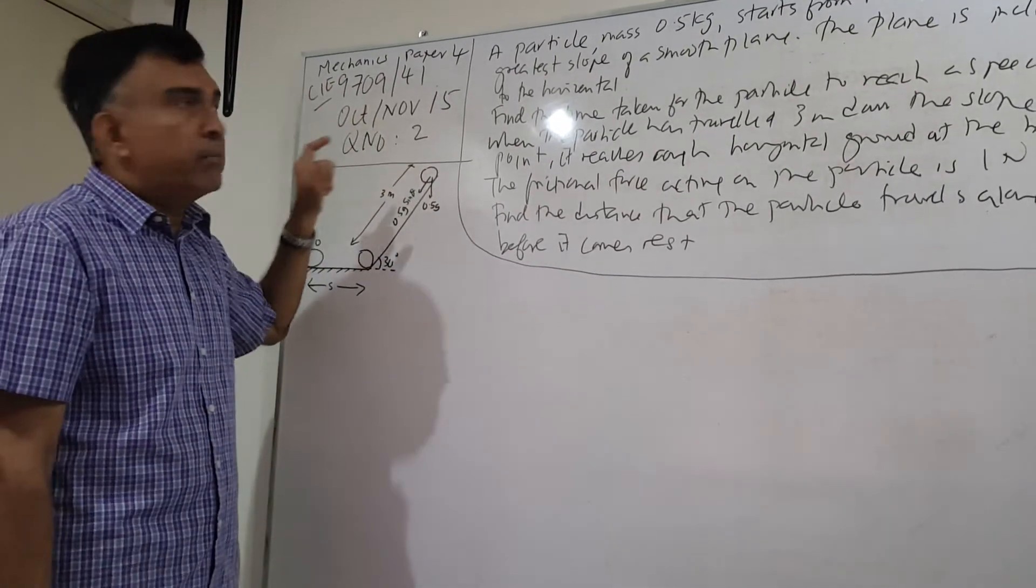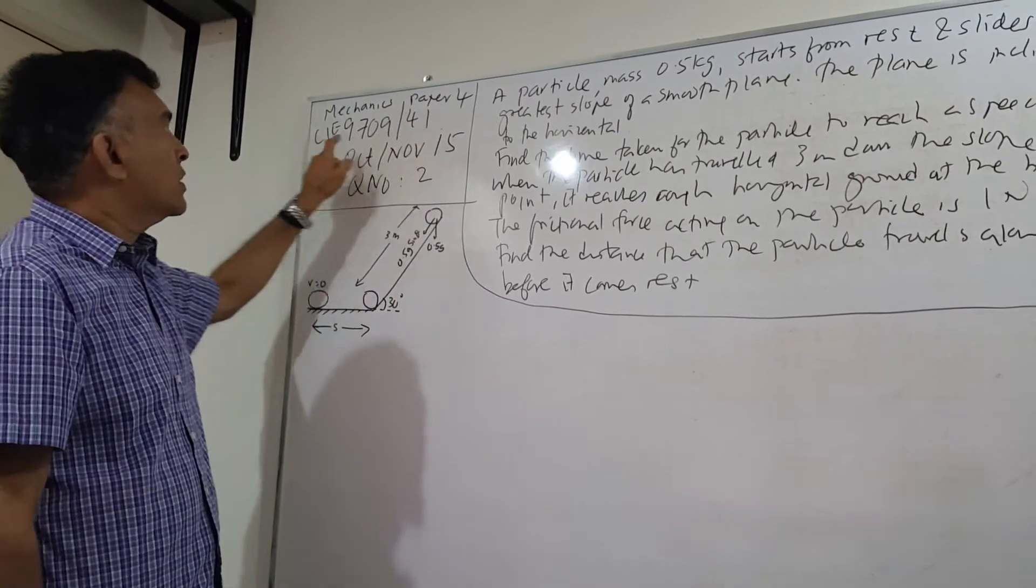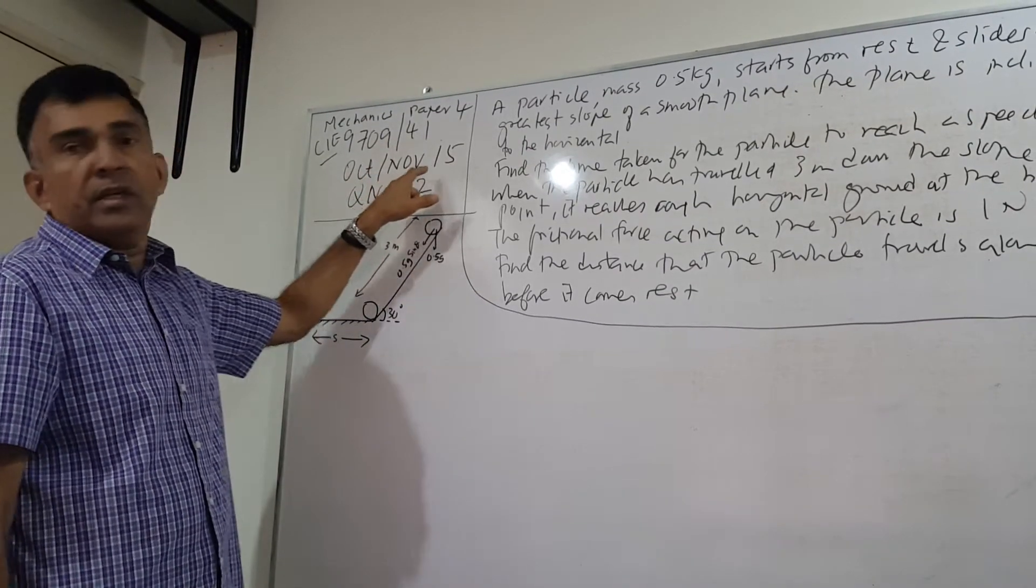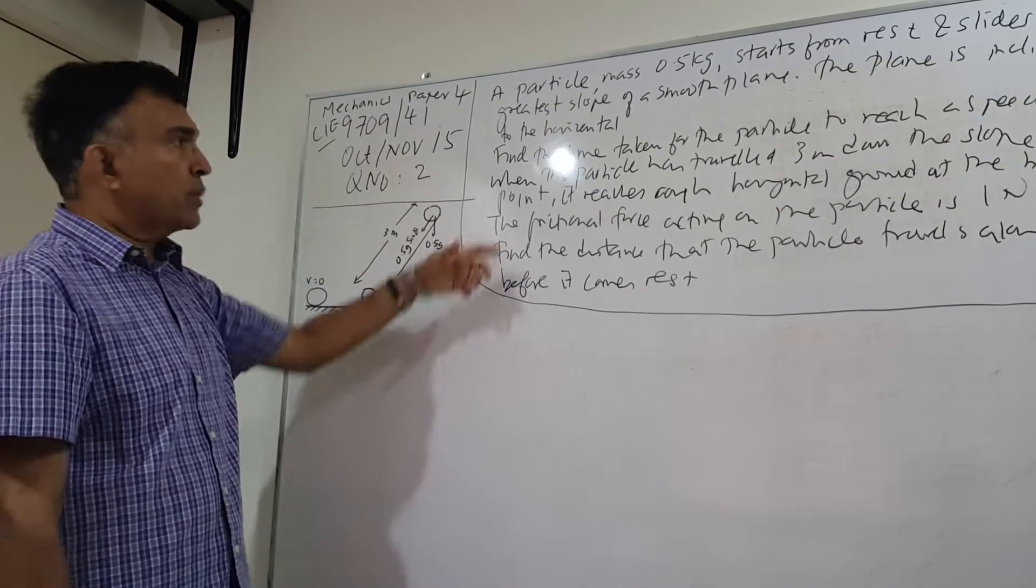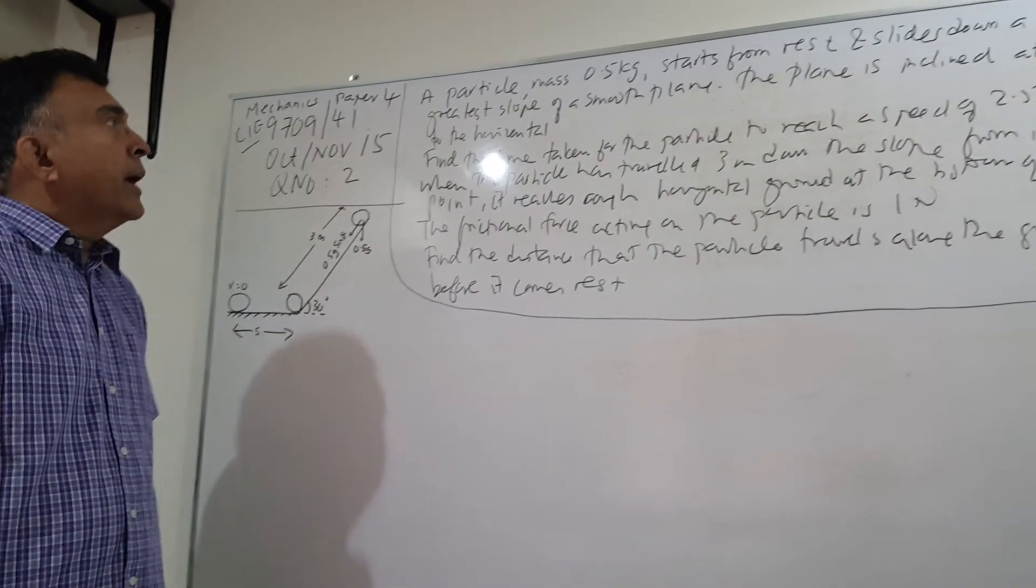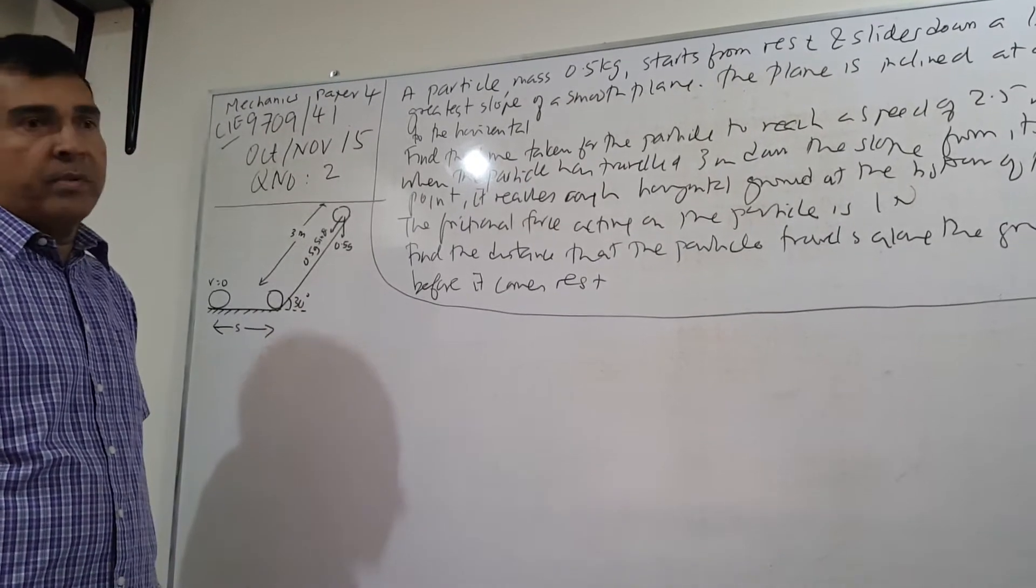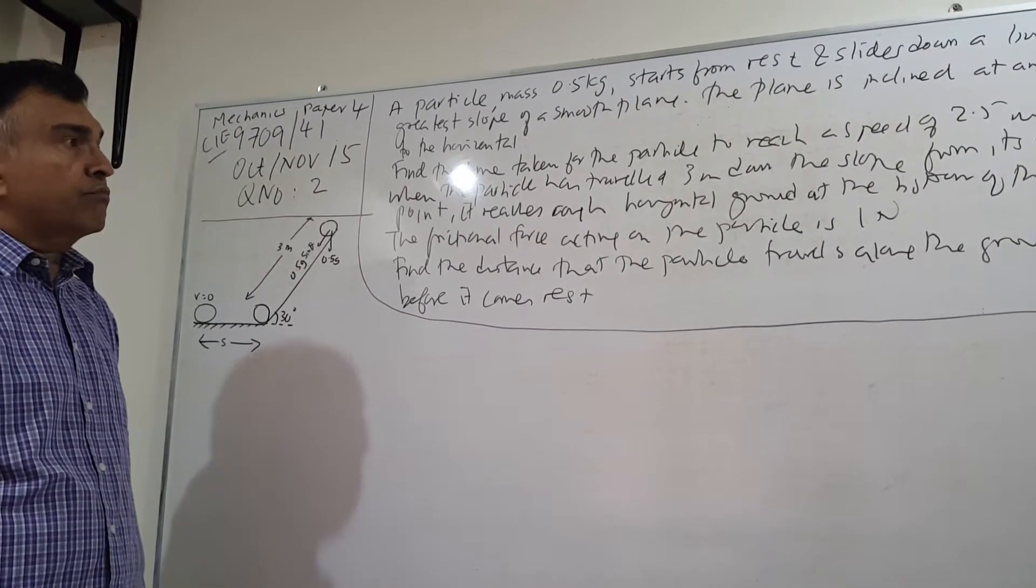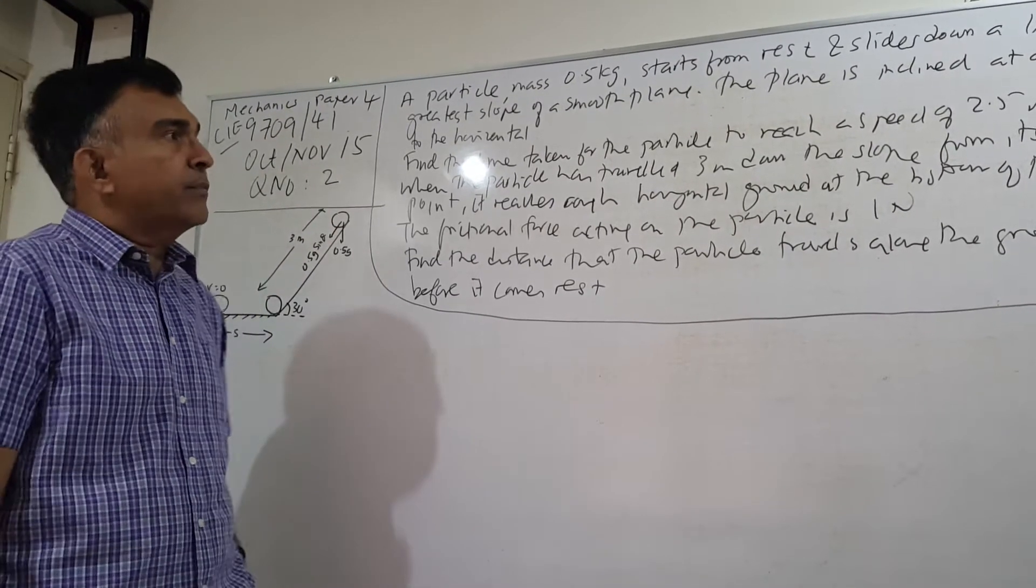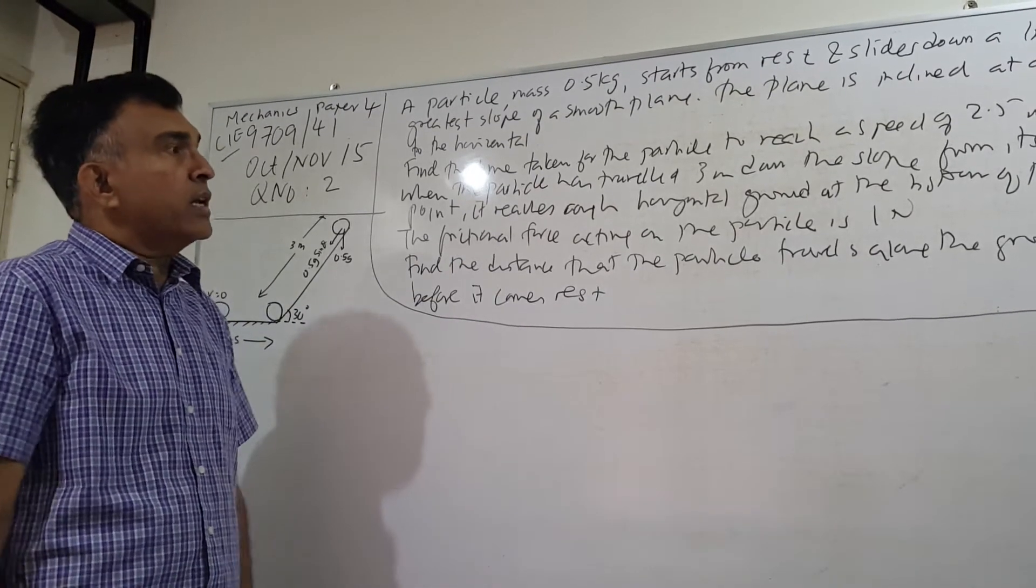This is the mechanics 1, M1 paper 4, subject code 9709/41 of the CIE exams. It appeared October November 2015 and we're going to discuss question number two. You can read the question, download the question paper from the CIE website and read the question in detail. I have just written it on the board so that you can guide us along. In case my handwriting is not so clear, you can look up the actual question paper.